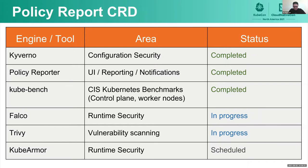One of the initiatives we're leading in the policy working group is creating a common way of reporting policy results. As Kubernetes policies become increasingly important for production deployments, there are several policy tools with different languages and features, but what seemed to be missing is a common way of reporting results from these policy engines. The Policy Report CRD is that effort, and working with the community, we now have tools like Kyverno, KubeBench, Falco, and others supporting the policy report.